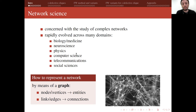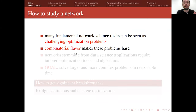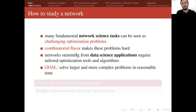The question of how to represent a network has an easy answer from a mathematical point of view: we use a graph where nodes or vertices are the entities in the network, and links or edges represent the relationships between two entities. Many fundamental network science tasks can be seen as challenging optimization problems, due to their combinatorial flavor. Networks stemming from data science applications are quite large, with many nodes and edges, requiring scalable optimization tools and algorithms.